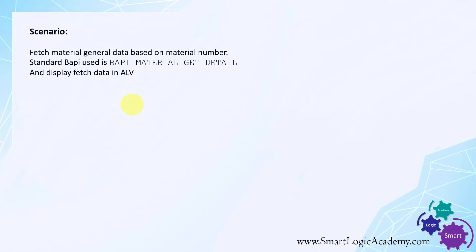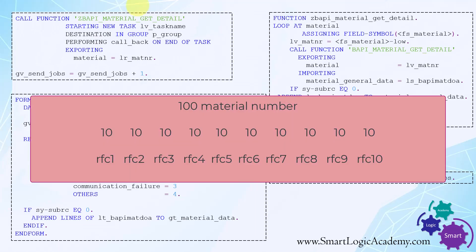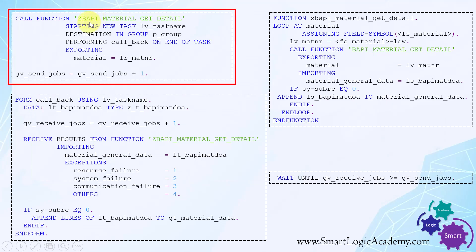Let's consider a scenario where we want to fetch material general data based on material number using the standard BAPI BAPI_MATERIAL_GET_DETAIL, and display the results in ALV. We want to fetch data for 100 material numbers, processing them in 10 different parallel tasks. So we divide the 100 material numbers into 10 packets, each containing 10 material numbers, and pass 10 material numbers to each RFC call. Look at this syntax carefully.